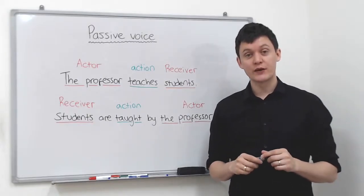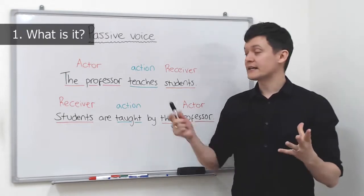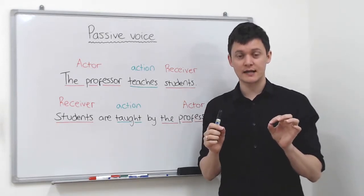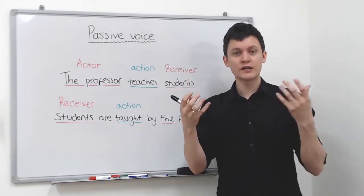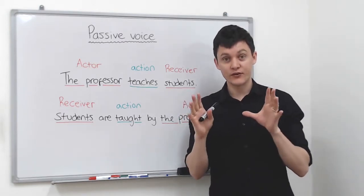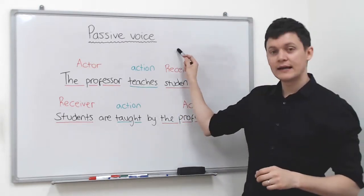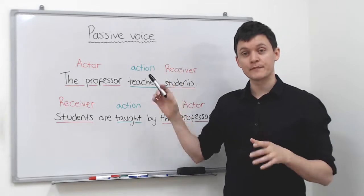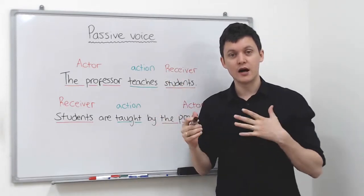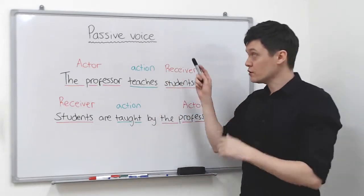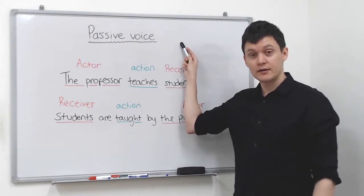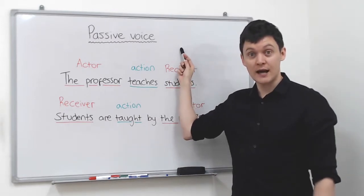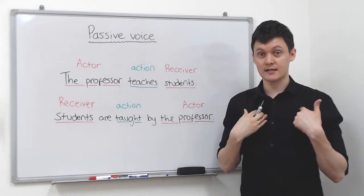The first question we need to answer today is: what is passive voice? But to answer that we must first understand an actor and a receiver. So let's look at a very simple example: I tap the whiteboard. In this sentence I'm the actor — I do this action. The whiteboard is the receiver — it receives my tap. So very simply: actor and receiver.